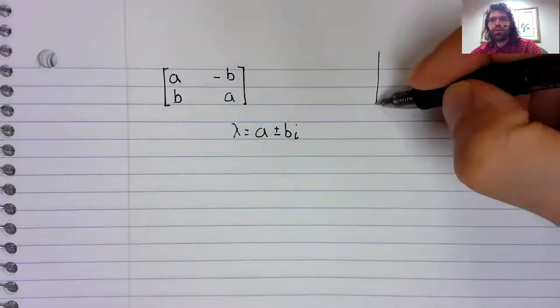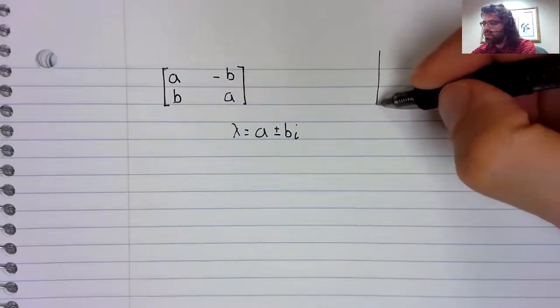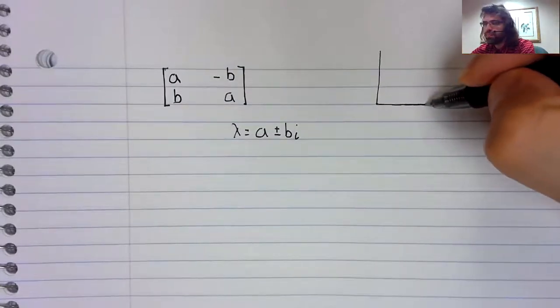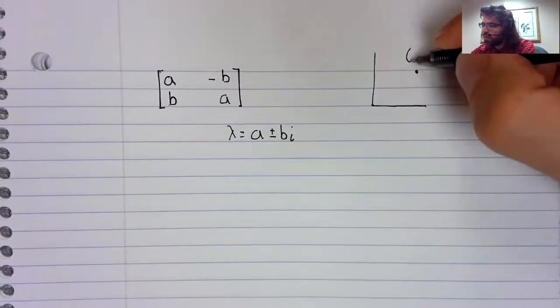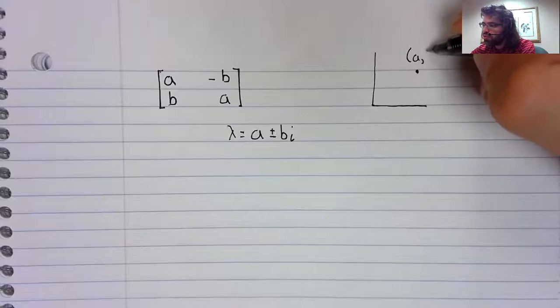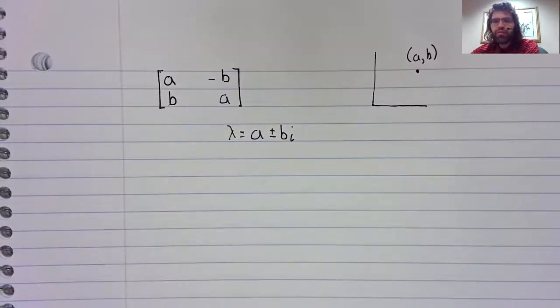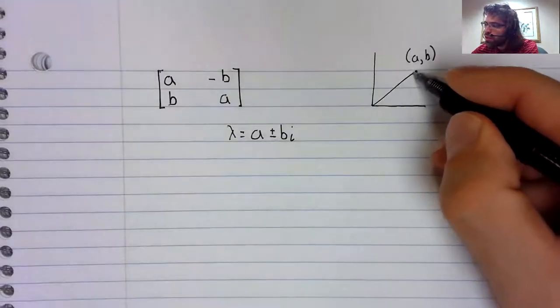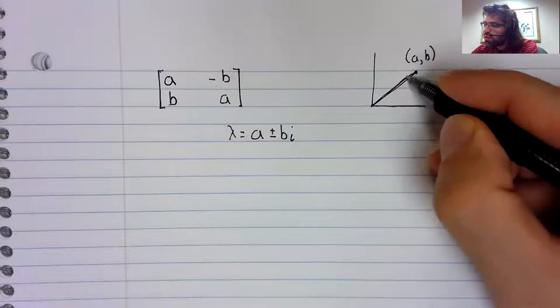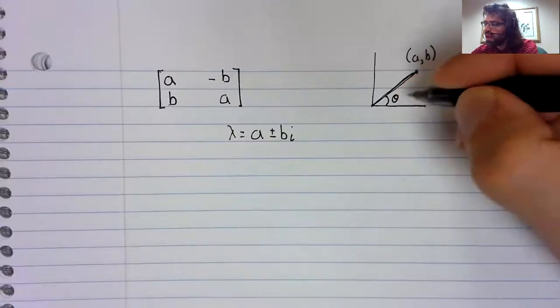On the complex plane, A plus B I would be graphed like this. And let's take note of this angle because we're going to want to refer to it shortly.